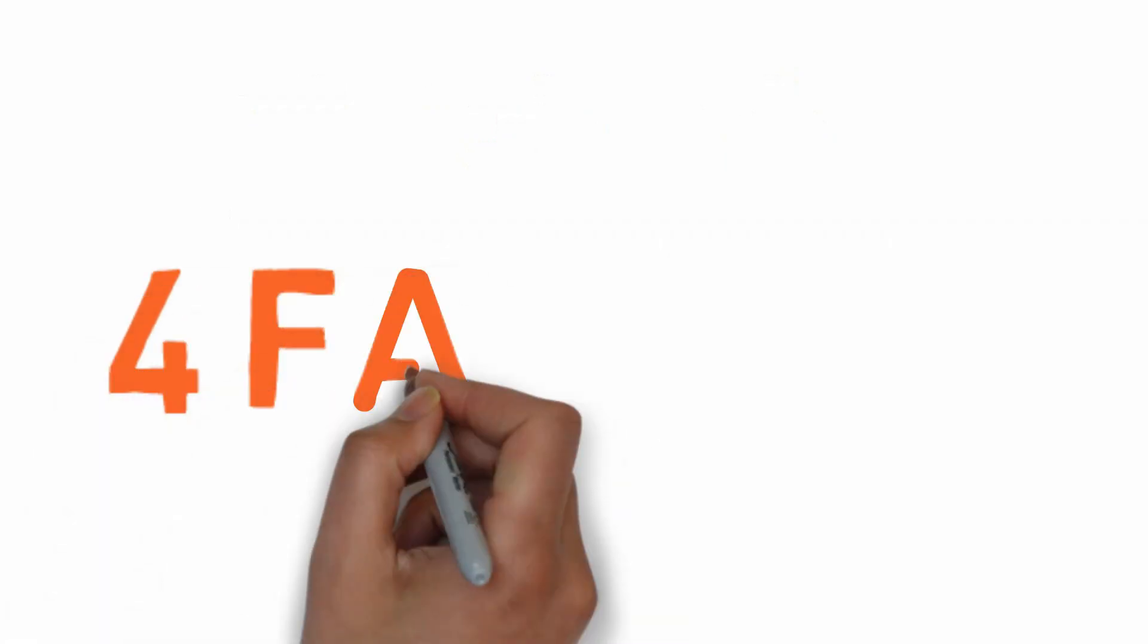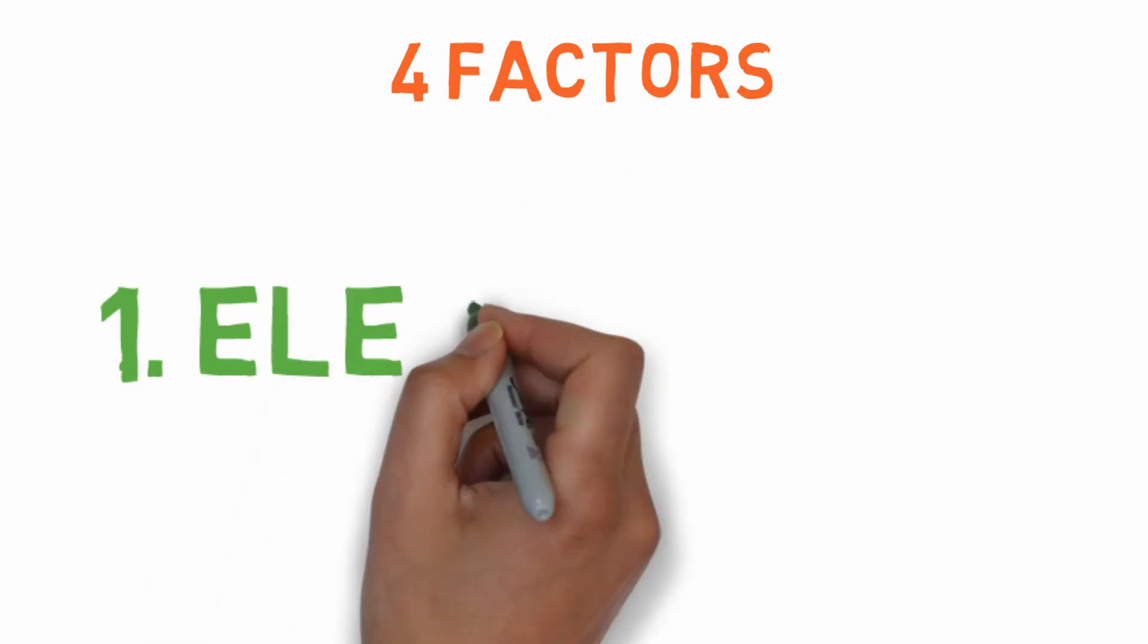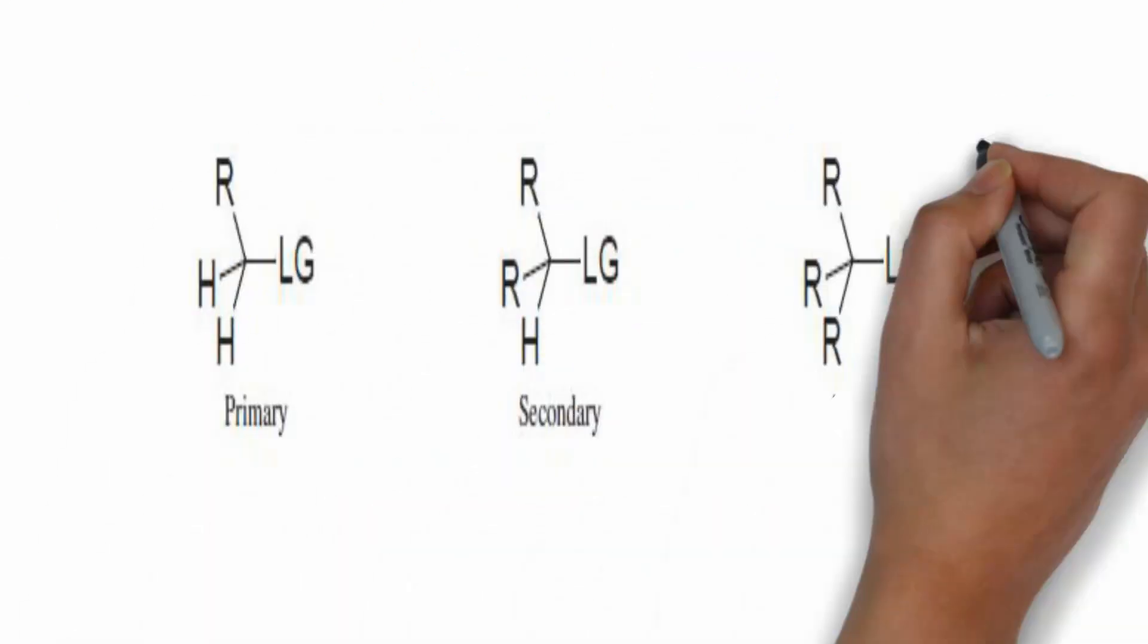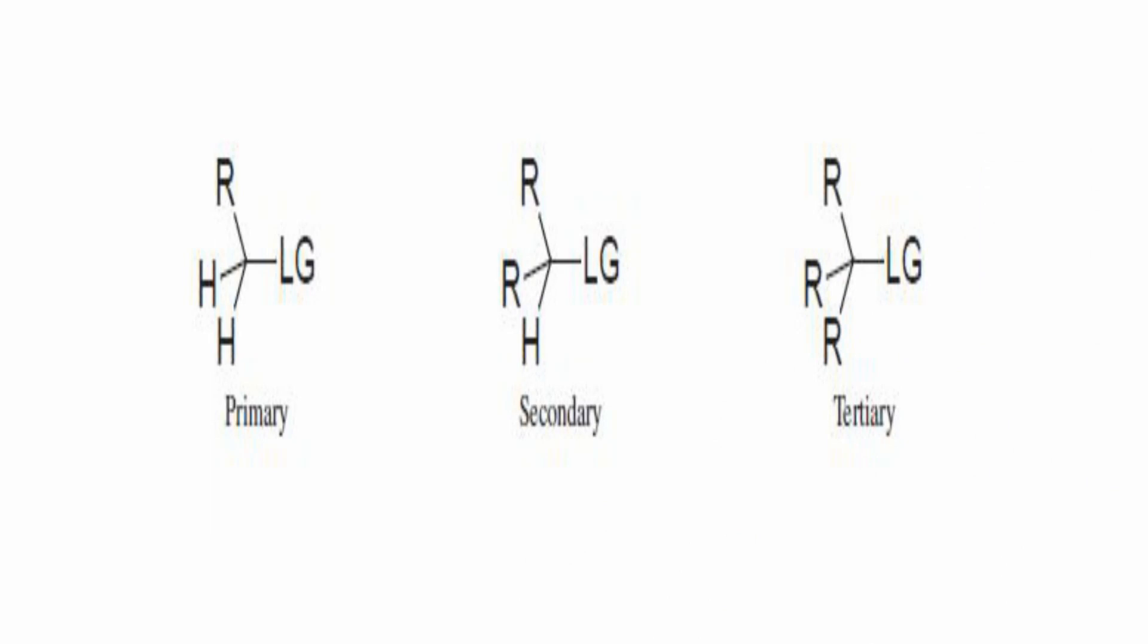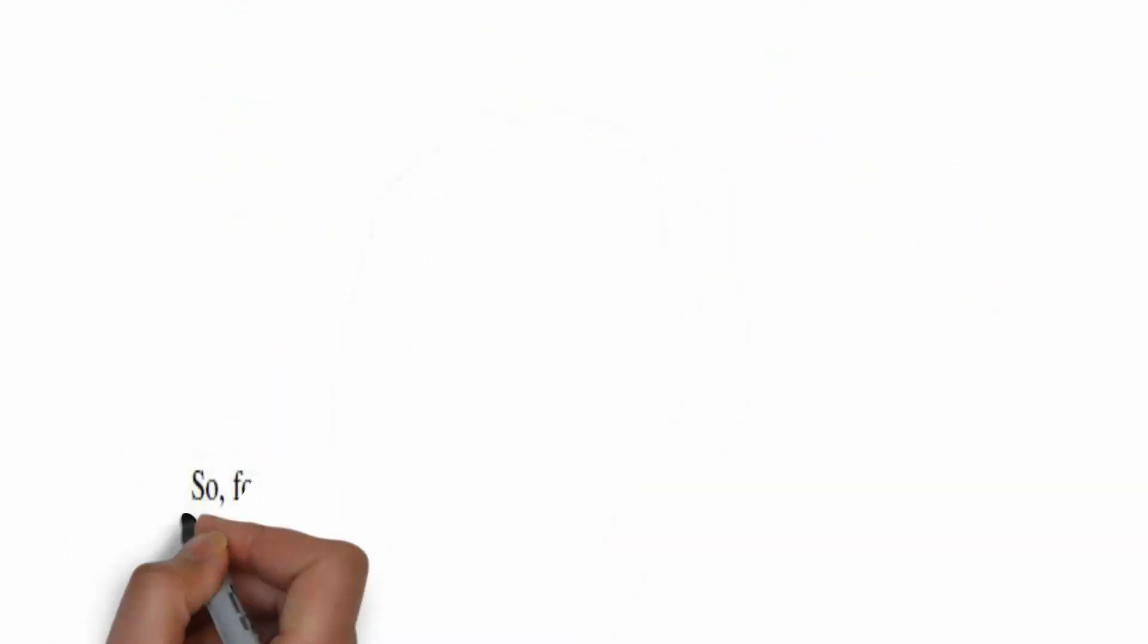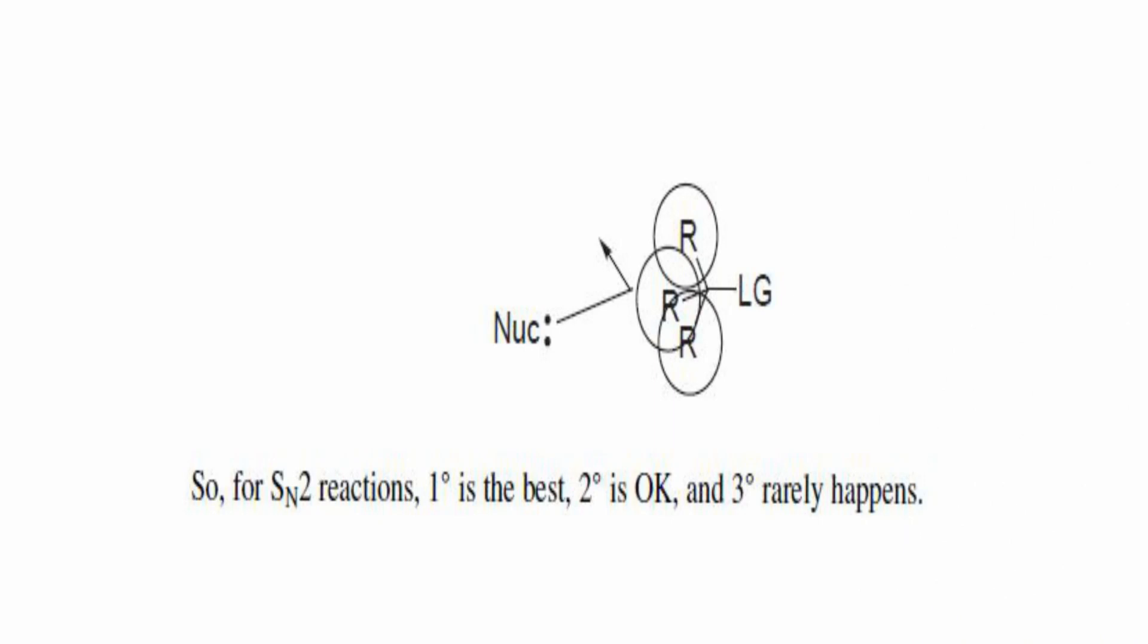There are four factors of determining if the reaction will go by SN2 or SN1. Our first factor is electrophile. If there are more R groups, also known as alkyl groups, with a carbon atom, nucleophile can't attack to have a SN2 reaction. So tertiary or 3 degree substituted doesn't favor SN2.